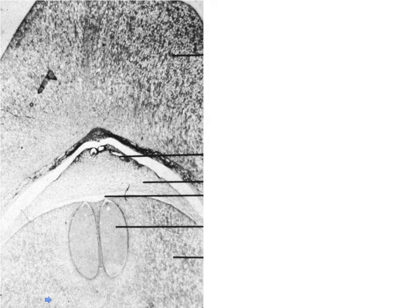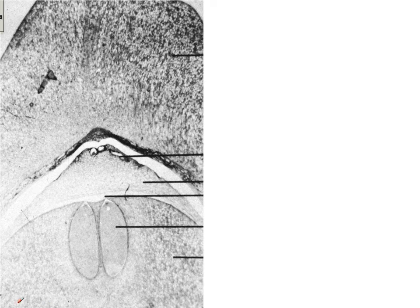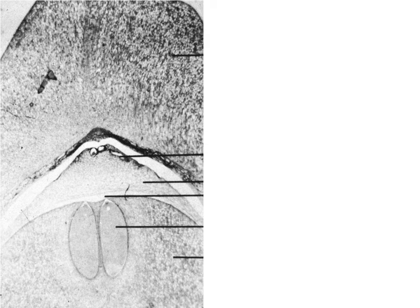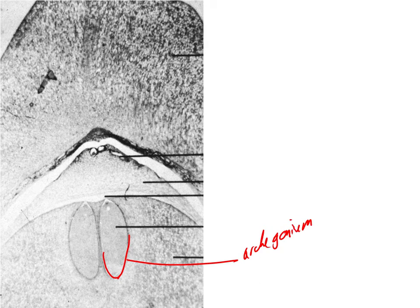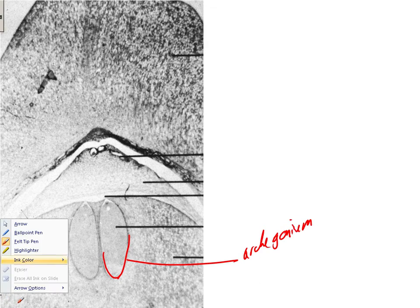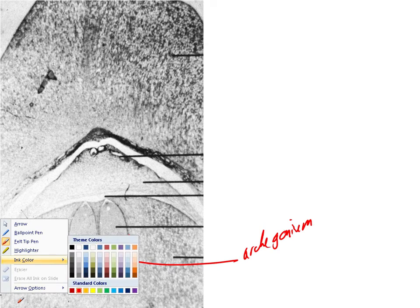Let's go on and look at this again in another slide — label the structures again. This is a little younger ovule that really does show the archegonia. The archegonium is really just a single layer around the outside. So that red line is the archegonium. In the center is the egg, surrounded by the archegonium.